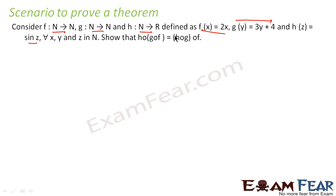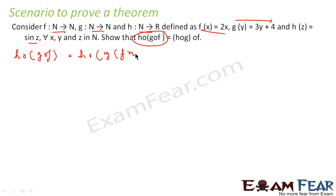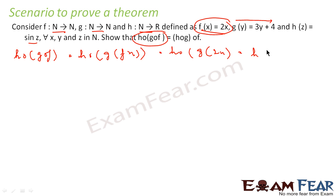We have to prove that h∘(g∘f) = (h∘g)∘f. Let us take the left side first. This is nothing but h of g of f(x), which is h of g(2x). Since g(y) = 3y + 4, this becomes h of (3·2x + 4), that is h of (6x + 4).